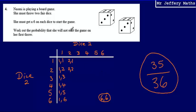So the probability that she will not start the game on her first throw will be 35 over 36.